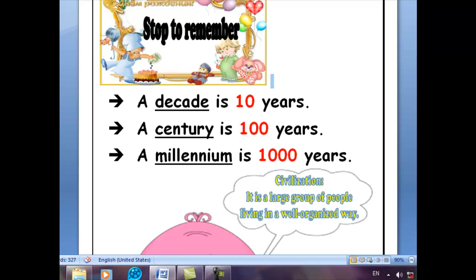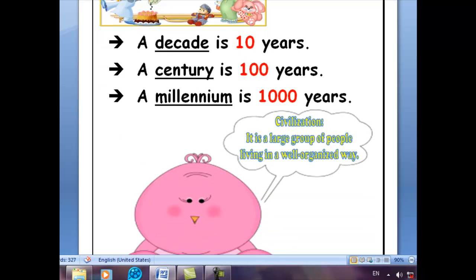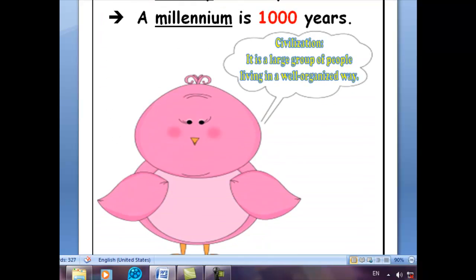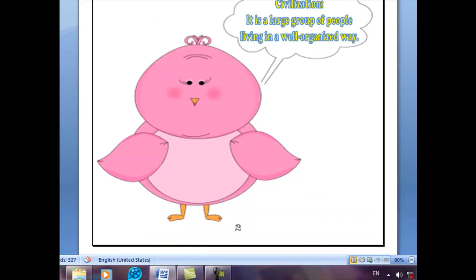Last time we took the definition of civilization, and we said it's a large group of people living in a well-organized way — in other words, the level of development at which people live together peacefully in communities. We said that to have a civilization, people had to find a source of fresh water, so as to settle down and grow crops.